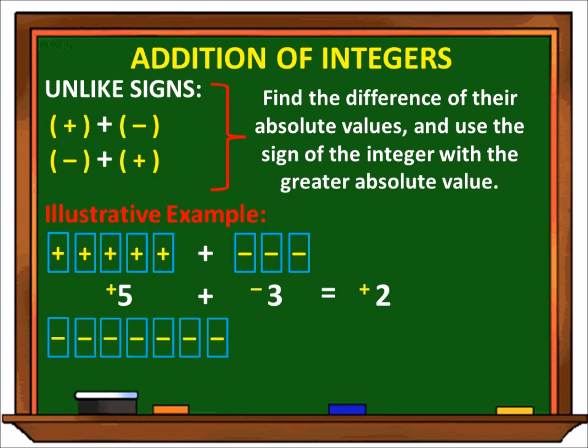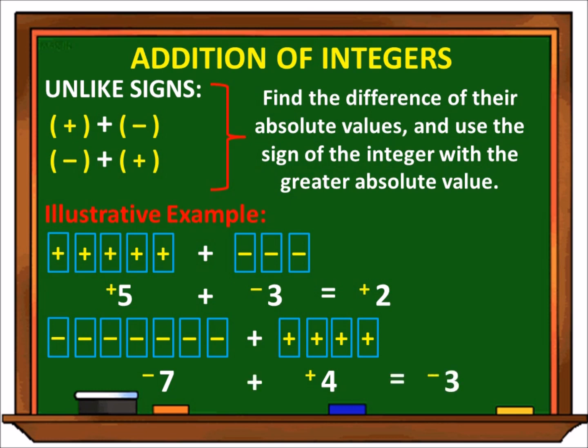Another example: we have 7 na negative plus 4 na positive. Kaya ang given natin ay negative 7 at positive 4. Mas malaki ngayon yung 7, kaya ang magiging answer natin ay negative, at isusubtract lang natin sila. Kaya, negative 7 plus positive 4 is equal to negative 3.